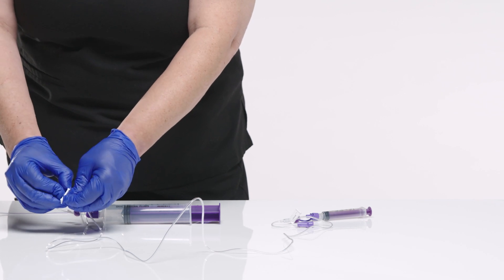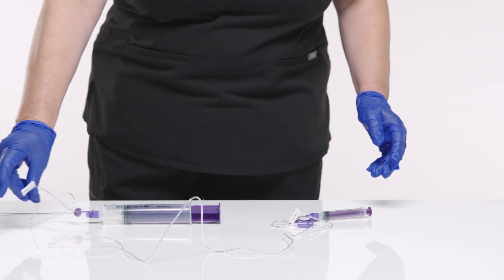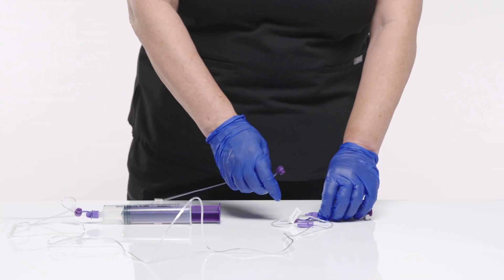Connect the EnFit male connector at the distal end of the extension set to the EnFit connection on the feeding tube.